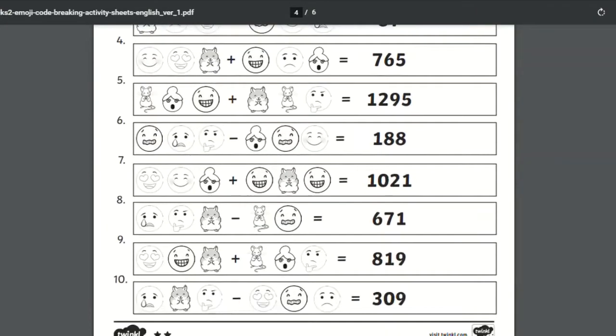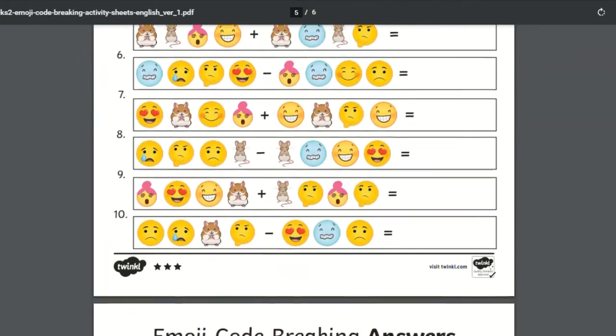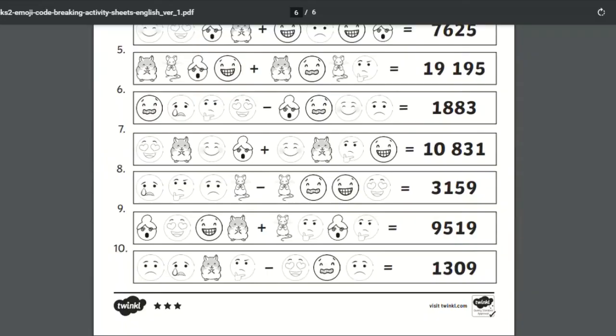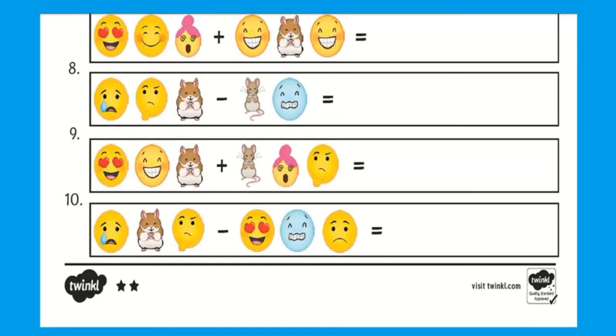Each worksheet has been designed and differentiated into three ability levels to suit your child and to ensure they feel challenged and supported. One star is the easiest and three stars is the most challenging.